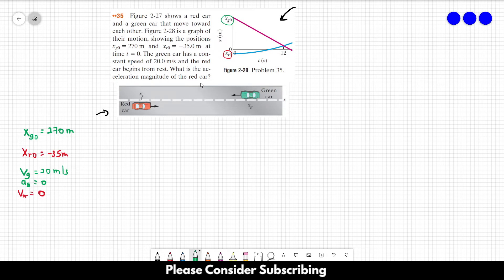What is the acceleration magnitude of the red card? We want to know AR. So let's first correct some misleading information because in this graph, the green card is represented by the red line. So this line should be green, and this line over here should be red instead of blue. This is much easier to understand the exercise.